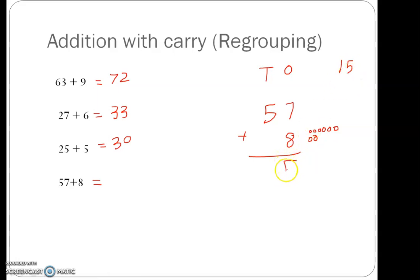So 5 in the ones place, 1 in the tens place. 5 plus 1, after 1, 2, 3, 4, 5, 6. So the answer that we get is 65.